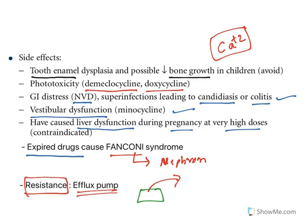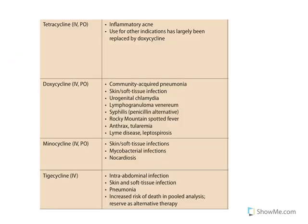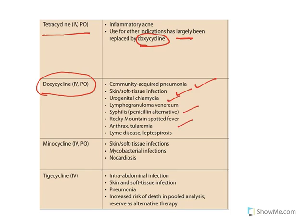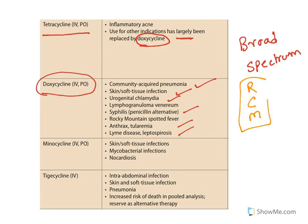These are the major uses of tetracyclines. Tetracycline can be taken as IV or oral, but it has largely been displaced by doxycycline. The most effective drug in this group is doxycycline, used to treat community-acquired pneumonia, skin and soft tissue infections, urogenital chlamydia, anthrax, tularemia, and Lyme disease. Tetracyclines are broad-spectrum antibiotics — they can treat rickettsia, chlamydia, and micromonospora infections.